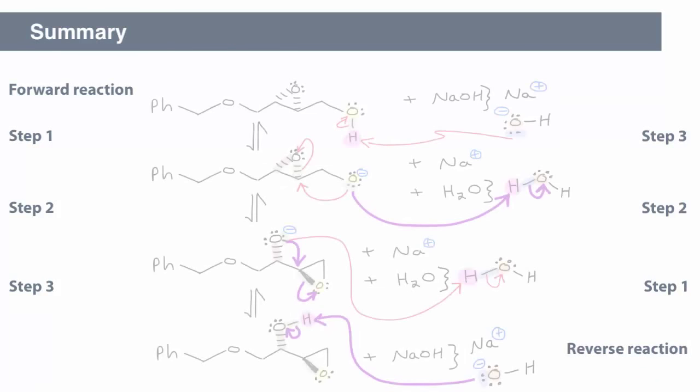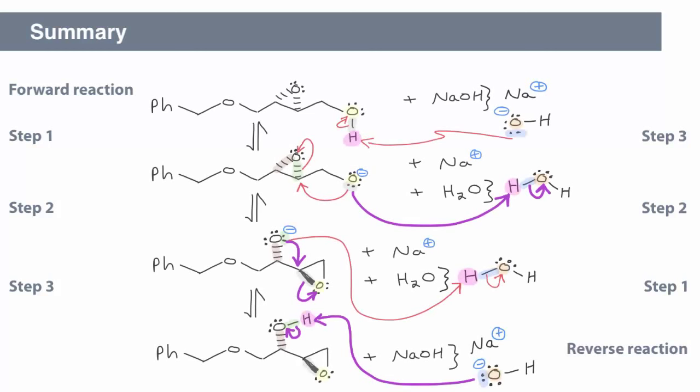In summary, even though we often think of reactions going in a forward direction to generate a product, the reverse reaction is always possible, in principle. Often one reaction, or one direction, is more favorable than the other because of the energetics of the reaction. You'll study those details in your courses as you learn various reaction types.